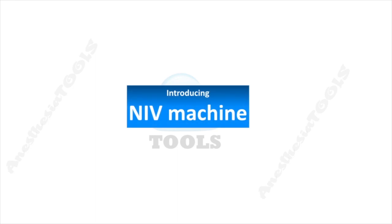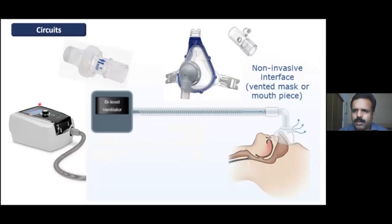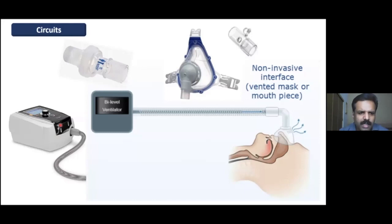Once we have decided in favor of NIV, you need to know your device. It's over to Dr. Anup Kumar to introduce the NIV machine. This is a BIPAP ventilator with a single limb circuit. Usually we have a two-limb circuit, but here only one limb is present, going to the patient for inspiration, and expiratory gas from the patient leaks around the leak port.